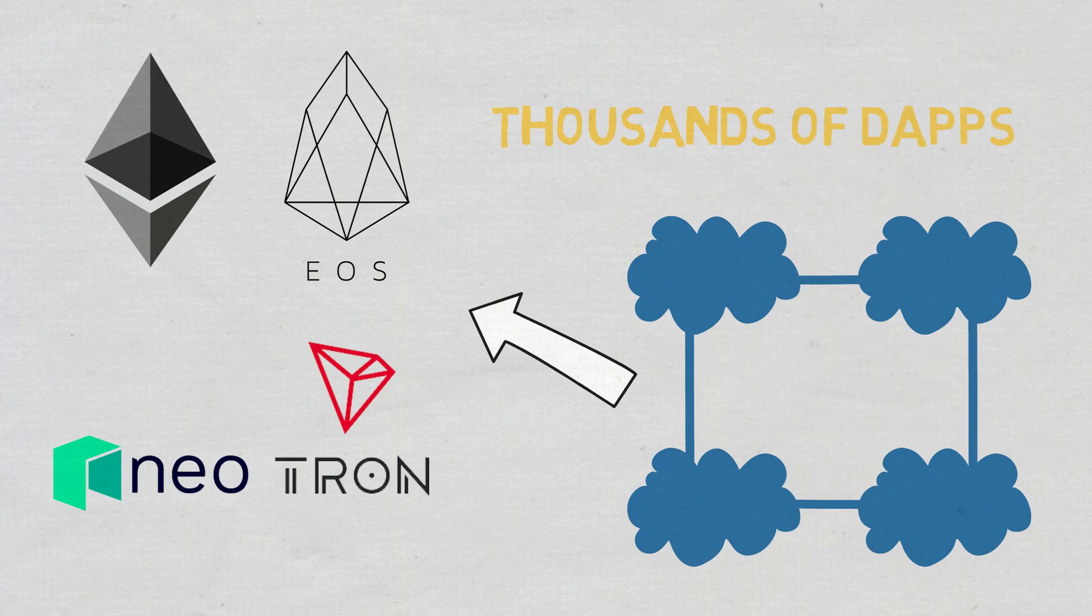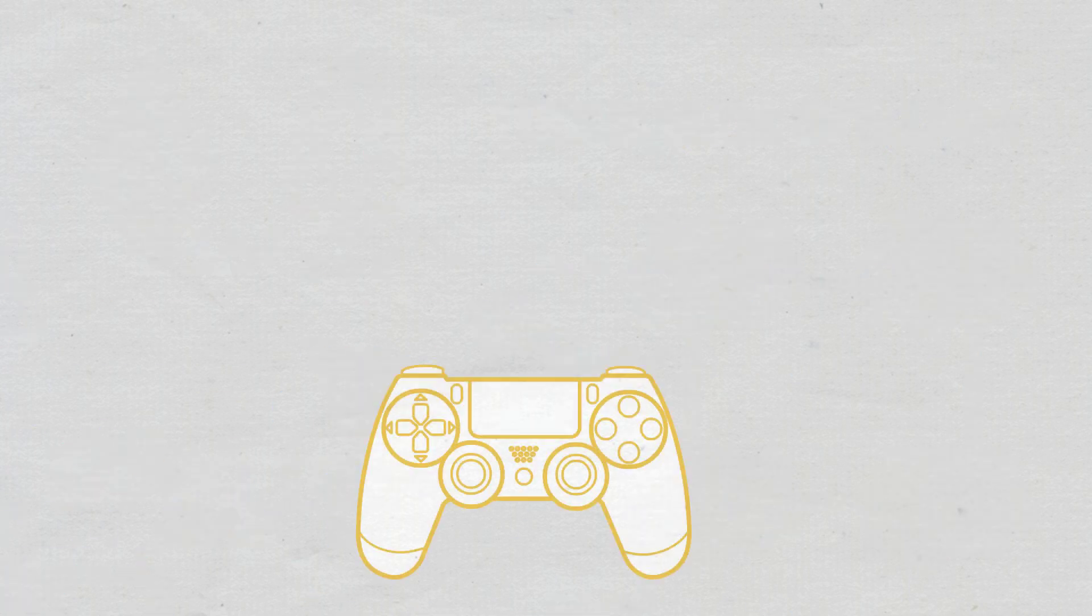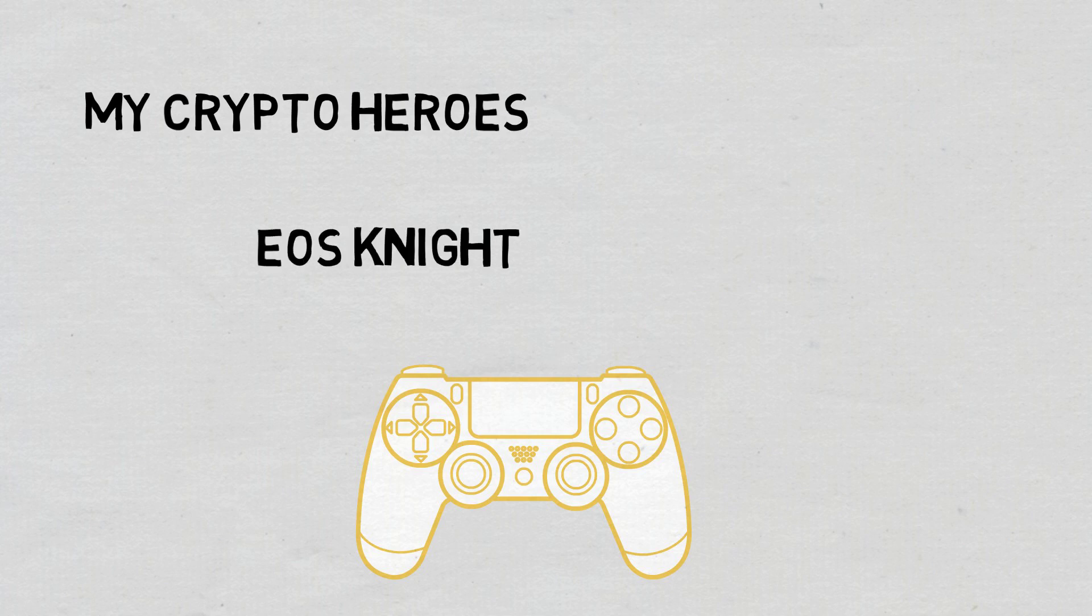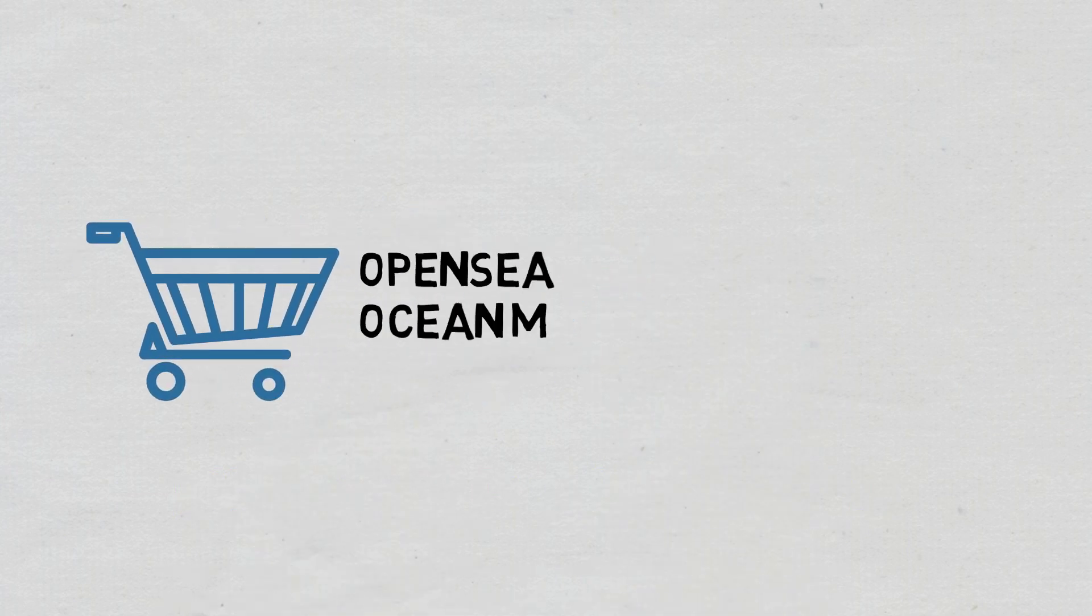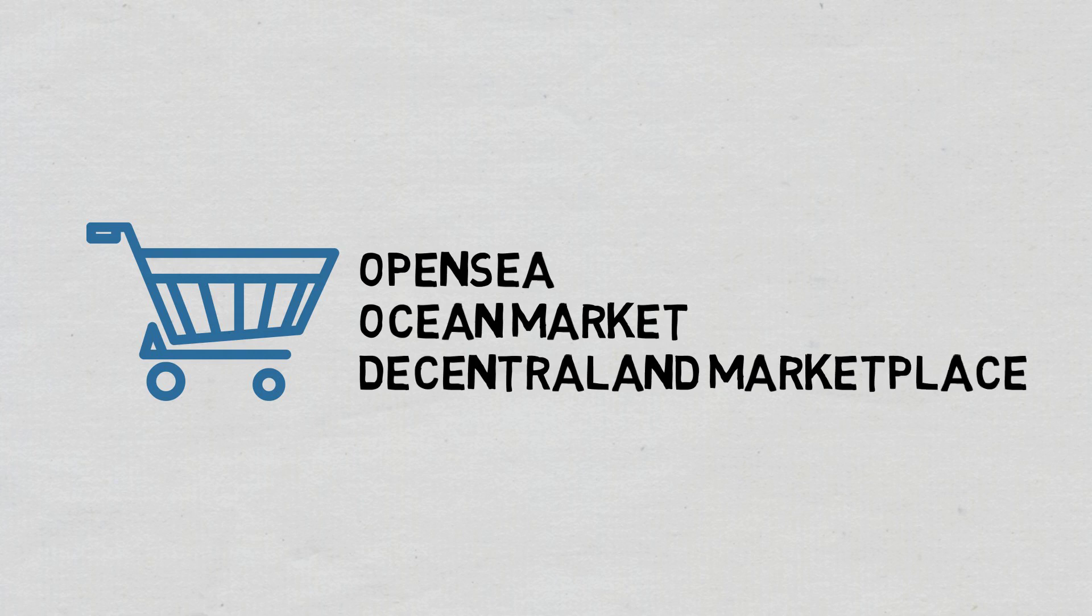Some of the most popular categories of dApps include Games, such as MyCryptoHeroes, EOS Knights, Dark Forest, and the IOI game; Decentralized exchanges, such as Uniswap and OneInch; Marketplaces, including OpenSea, OceanMarket, and Decentraland Marketplace; Gambling, such as Ethereum.